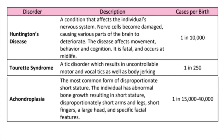Huntington's disease: a condition that affects the individual's nervous system. Nerve cells become damaged, causing various parts of the brain to deteriorate. The disease affects movement, behavior, and cognition. It is fatal and occurs at midlife. Cases per birth: 1 in 10,000. Tourette syndrome: a tic disorder which results in uncontrollable motor and vocal tics, as well as body jerking. Cases per birth: 1 in 250. Achondroplasia: the most common form of disproportionate short stature. The individual has abnormal bone growth resulting in short stature, disproportionately short arms and legs, short fingers, a large head, and specific facial features. Cases per birth: 1 in 15,000 to 40,000 U.S.